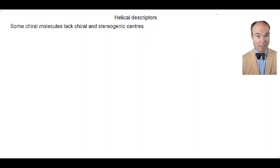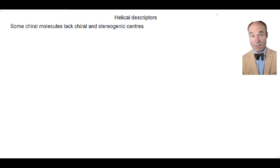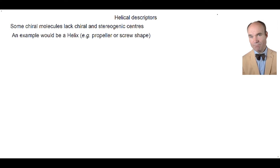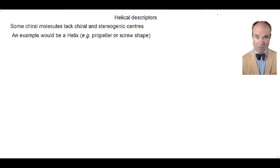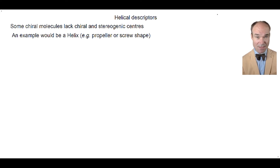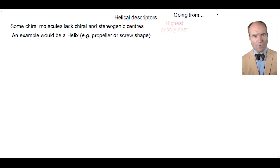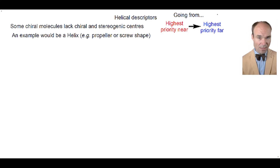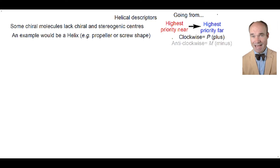There is another descriptor for molecules that lack a point with four different substituents attached — that's to say a chiral center — but they still have enantiomers. Examples of this are molecules that offer a helix shape; imagine a propeller or a screw. When providing a stereochemical descriptor, instead of four substituents requiring prioritization, we just need to analyze two: the highest priority substituent near at the front and the highest priority substituent far at the back. If the movement from higher priority near to higher priority far is clockwise, it's given the descriptor P for plus. If anticlockwise, the descriptor is M for minus.